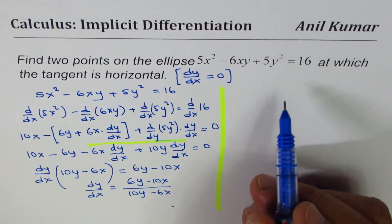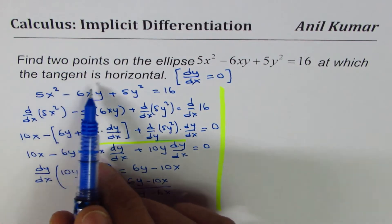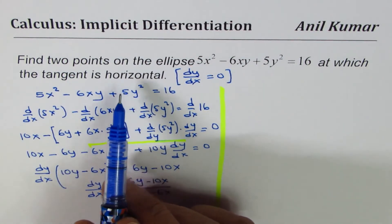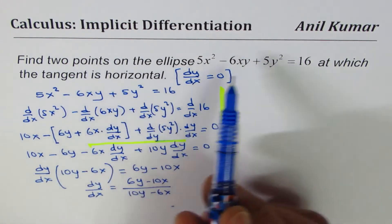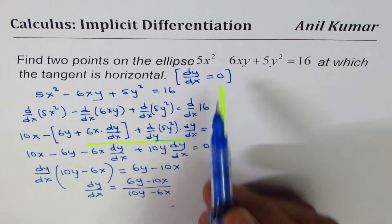Now, if you look at the equation, it says at which point the tangent is horizontal. We need to find two points on this ellipse at which the tangent is horizontal. That means dy/dx is 0.